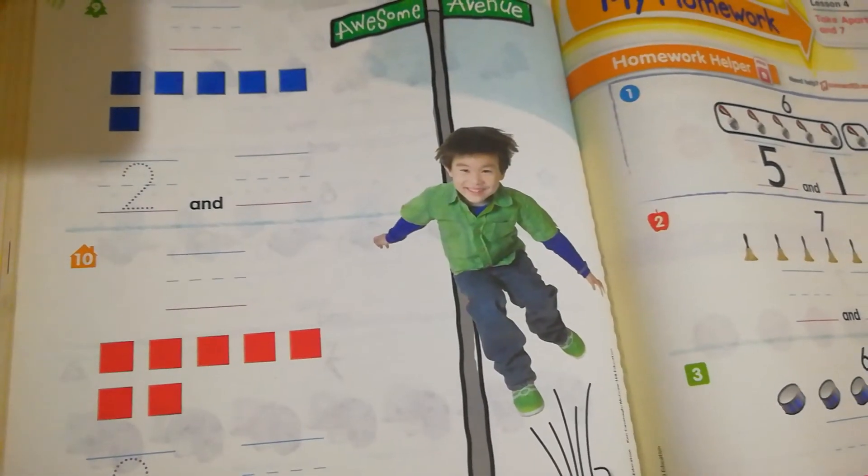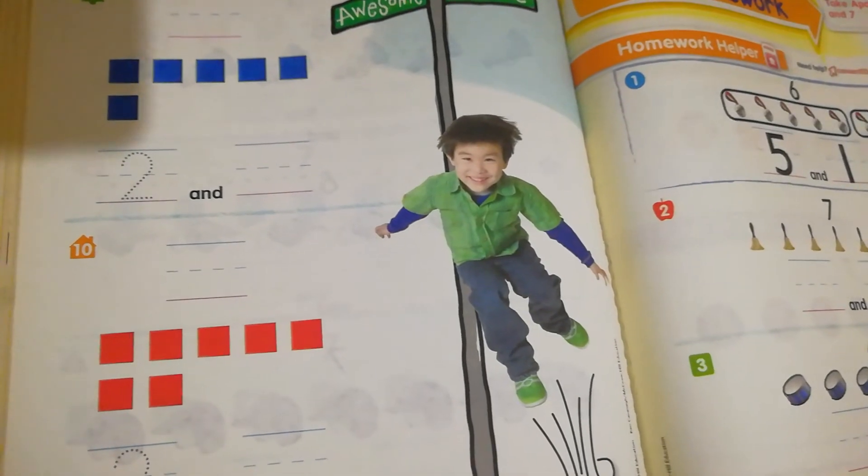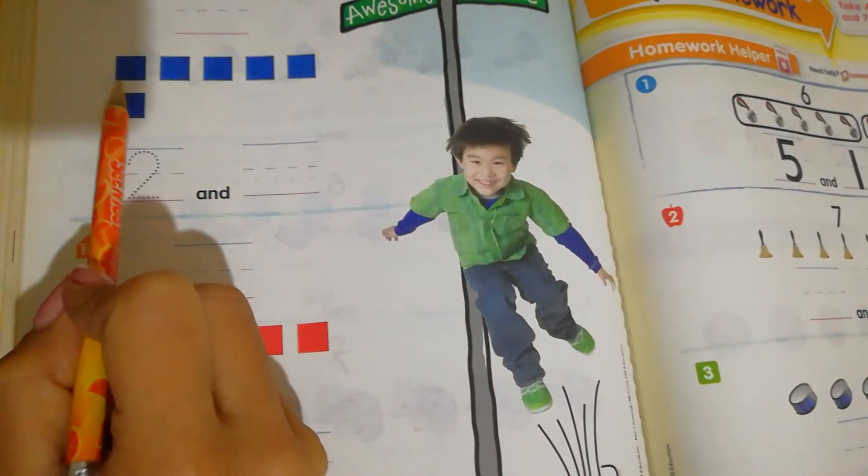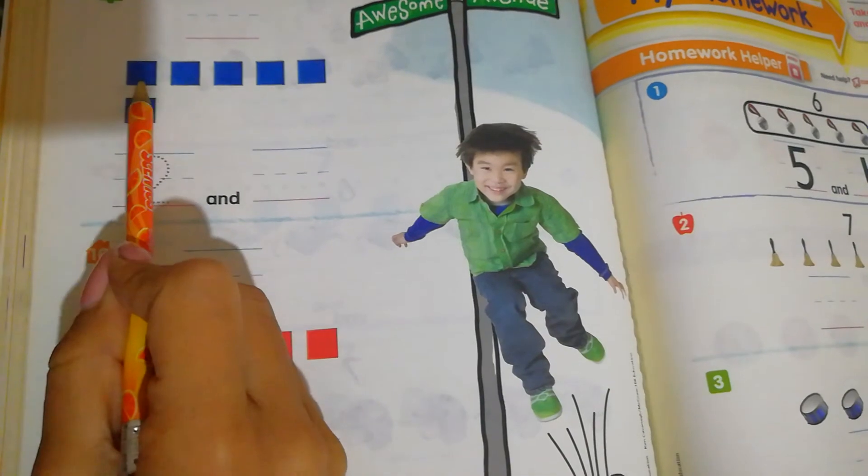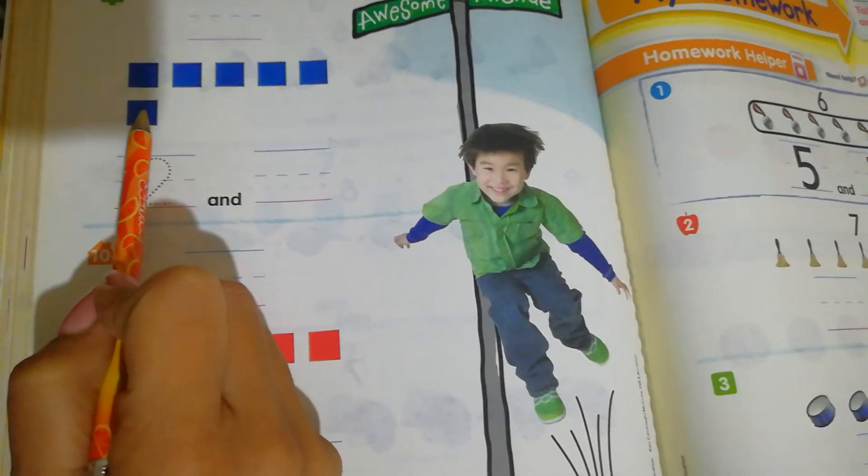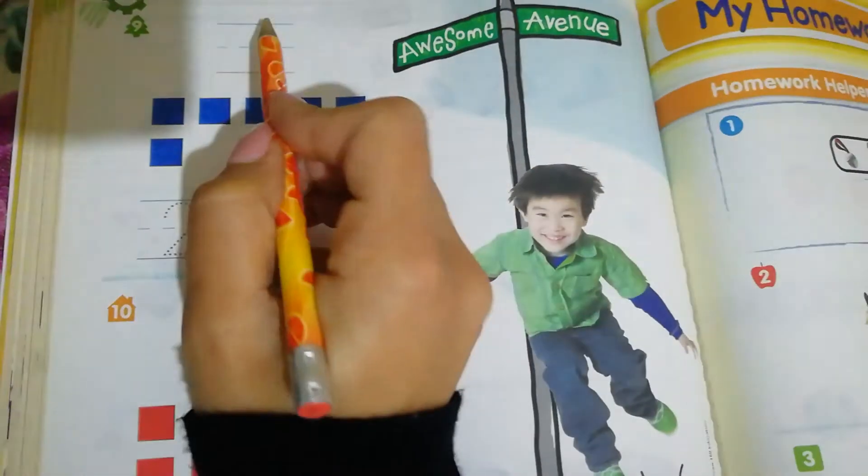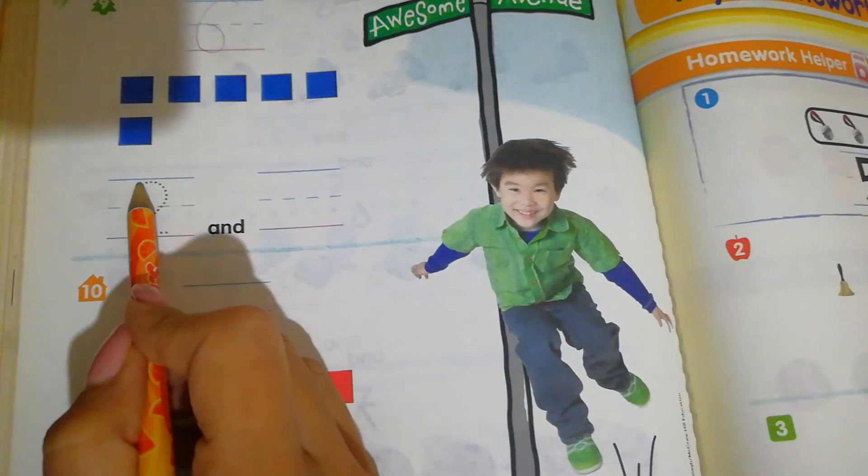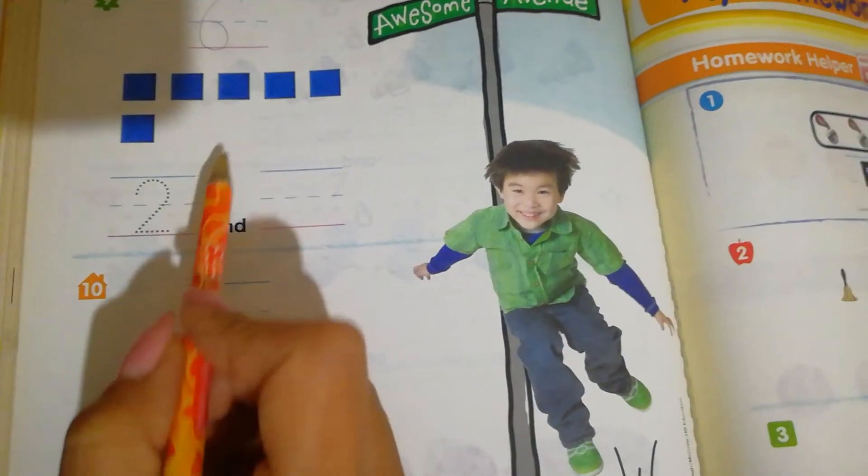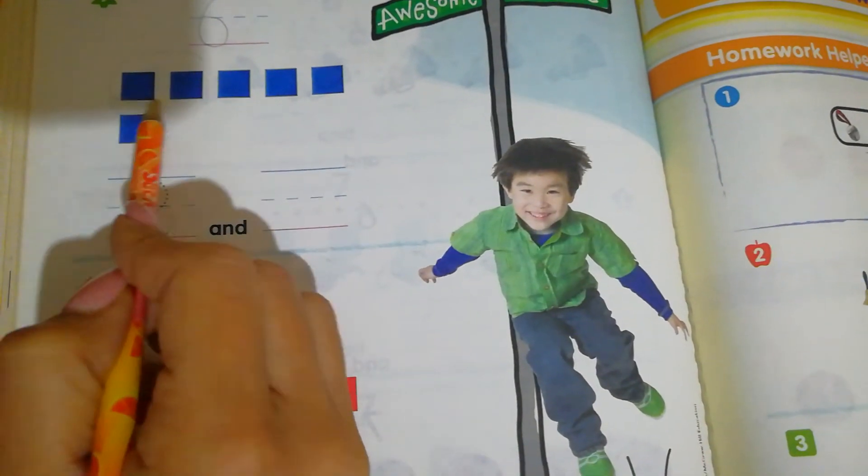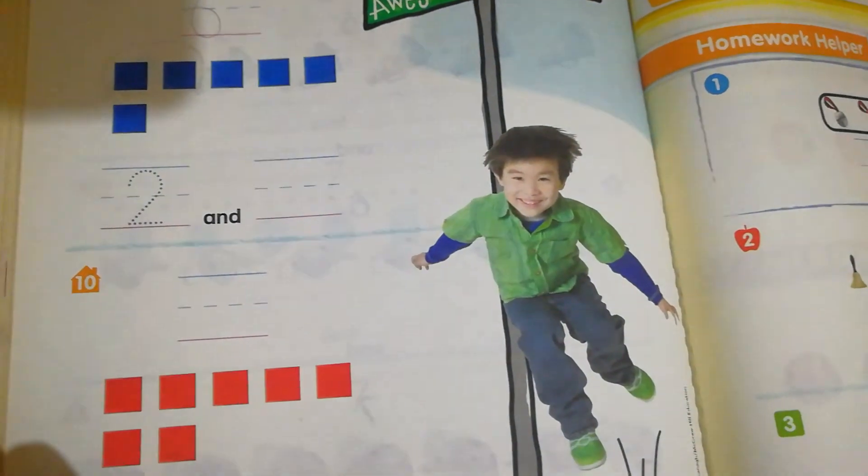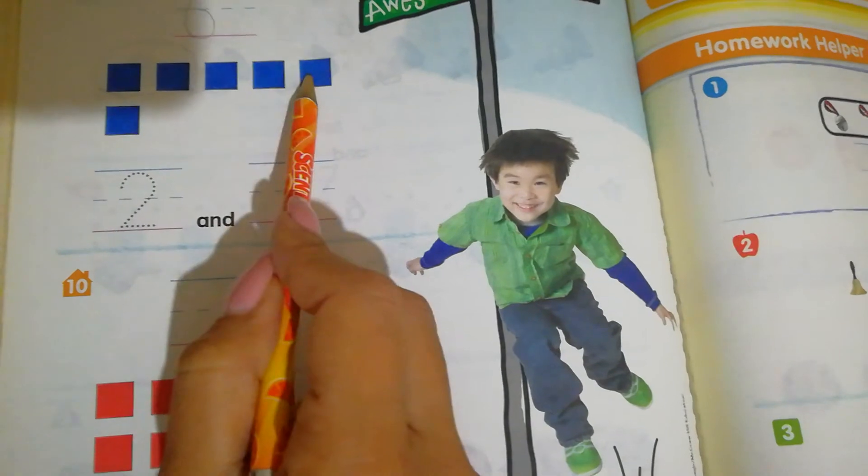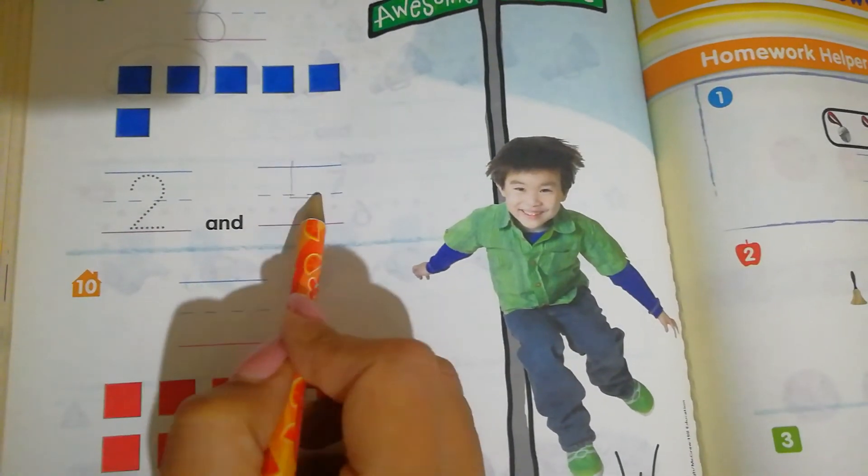Now we have to do page 278. Look, we have number of squares: one, two, three, four, five, six. So we write six here. They told us take apart first two. So if we take two apart, how many are left? One, two, three, four. So we write four here.